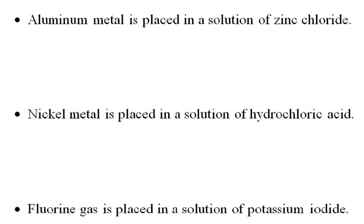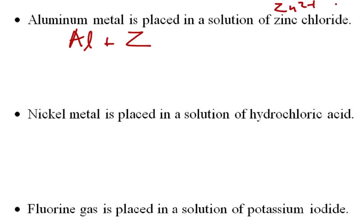Let's practice. Aluminum metal is placed in a solution of zinc chloride. We write aluminum metal as Al, and for zinc chloride, we know zinc is 2+ and chloride is Cl⁻, so the compound is ZnCl₂.